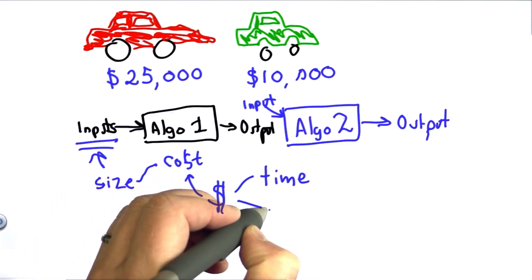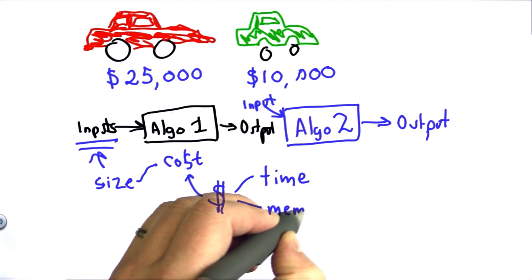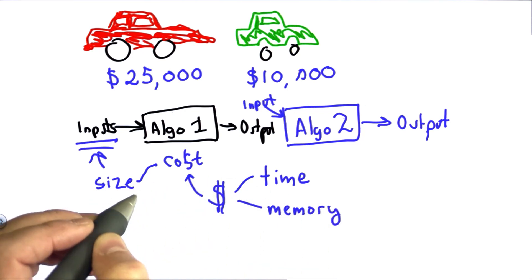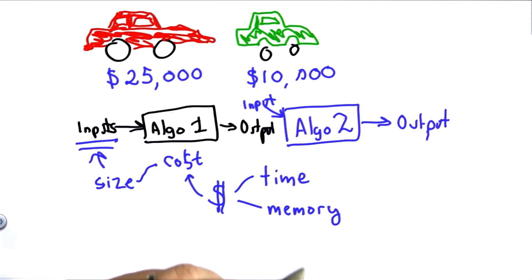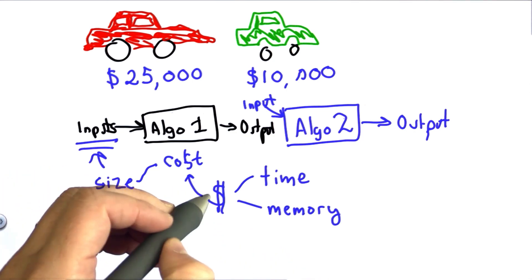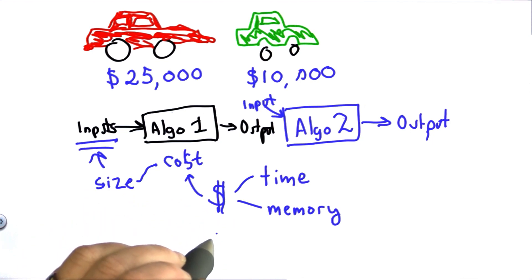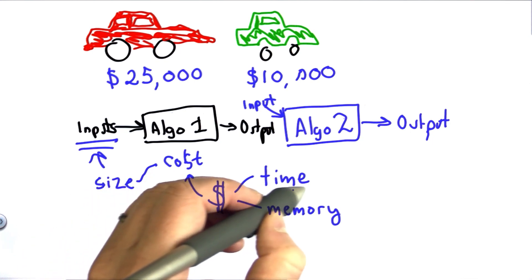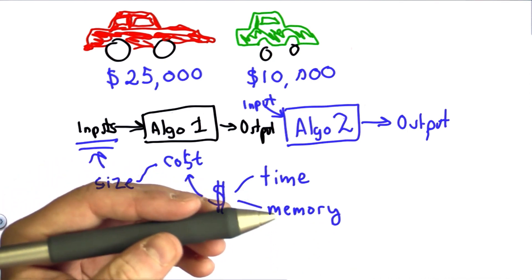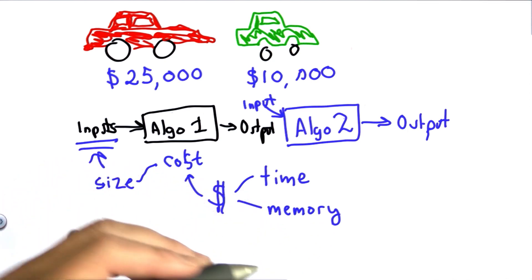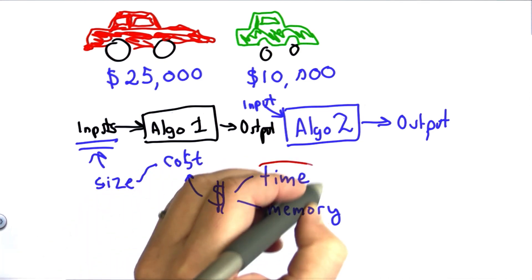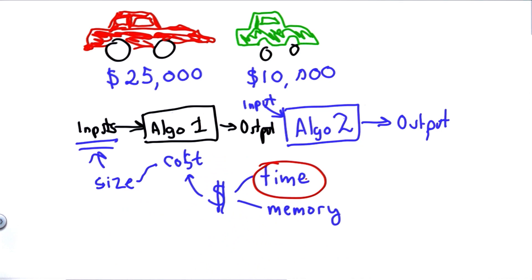The other main cost is often memory. So if we know that we need a certain amount of memory to be able to execute our algorithm, well, that tells us something about the size of computer we need and how expensive that's going to be. So we don't usually talk about cost in terms of dollars when we analyze algorithms. We're talking about cost in terms of time and memory, but those things in real implementations end up being cost in terms of dollars. So we're mostly going to focus on measuring time, and time is usually the most important cost of running an algorithm.